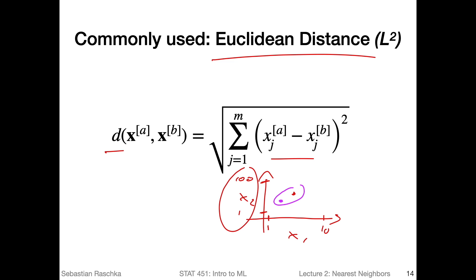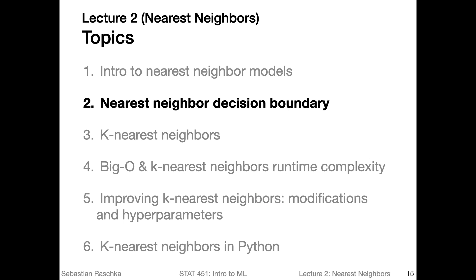But before getting too distracted by hyperparameters, let me wrap up this first video. In the next video, we will take a closer look at the nearest neighbor decision boundary.